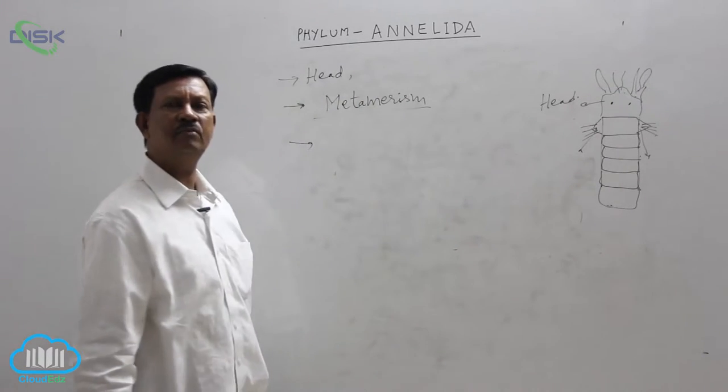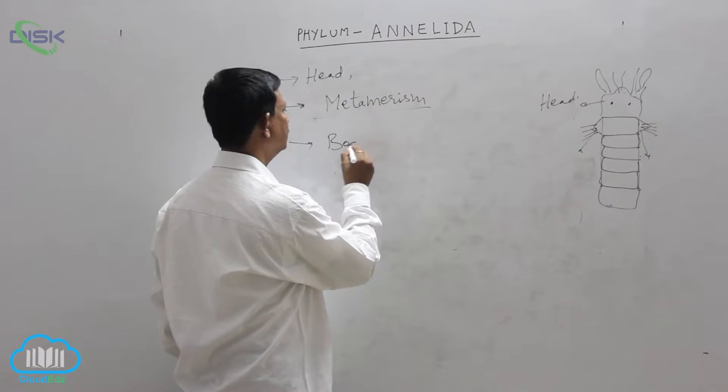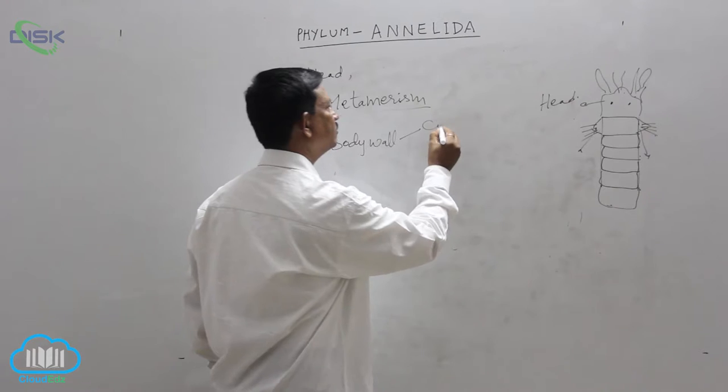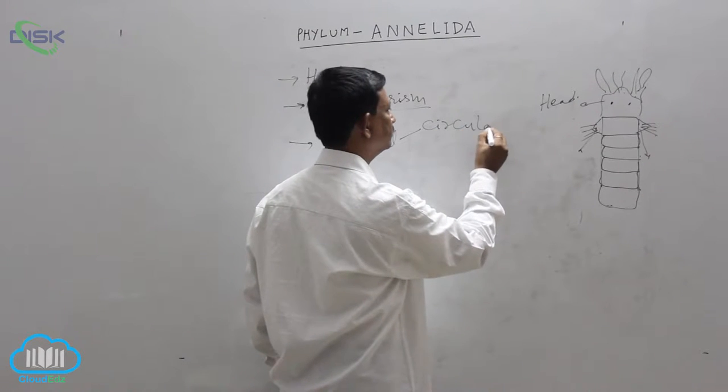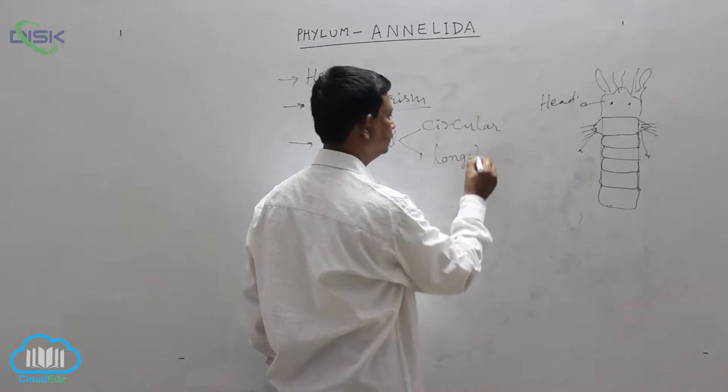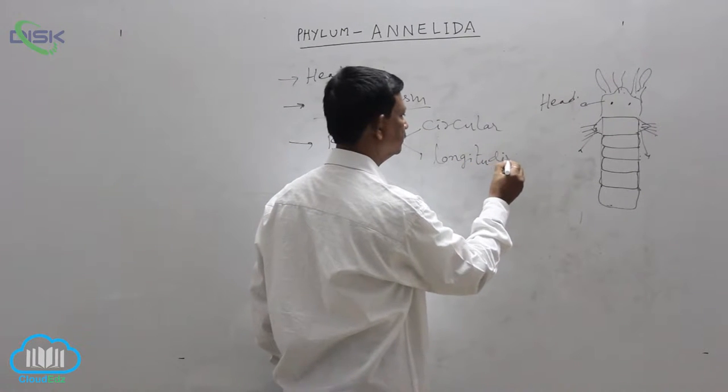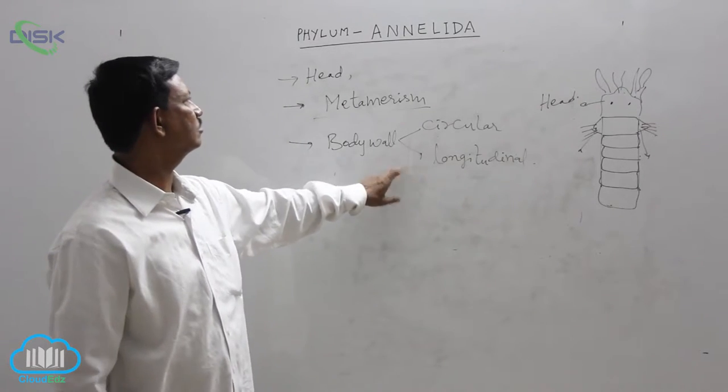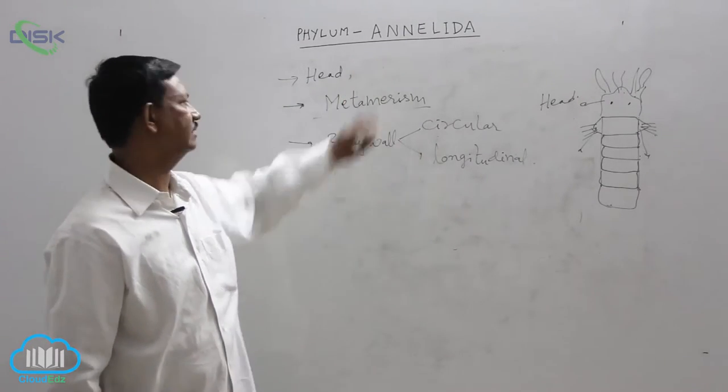In the body wall circular and longitudinal muscles are also present. These muscles help in locomotion. These muscles are also first time developed in the phylum annelida.